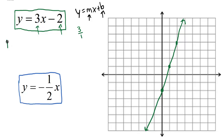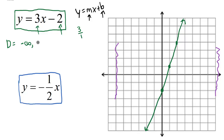Let's determine the domain and range in interval notation. For domain, we think of the lowest and highest x values. Following the x values to the left, they keep going toward negative infinity. Following them to the right, they keep going toward positive infinity. We use parentheses with infinity symbols, so the domain is negative infinity to positive infinity.